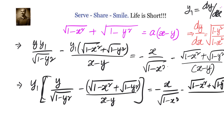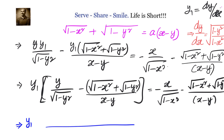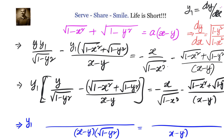Now take LCM and simplify. On the left hand side the denominator becomes (x minus y) times √(1 minus y²), and on the right hand side the denominator becomes (x minus y) times √(1 minus x²). The left hand side numerator will have y times (x minus y), giving xy minus y².